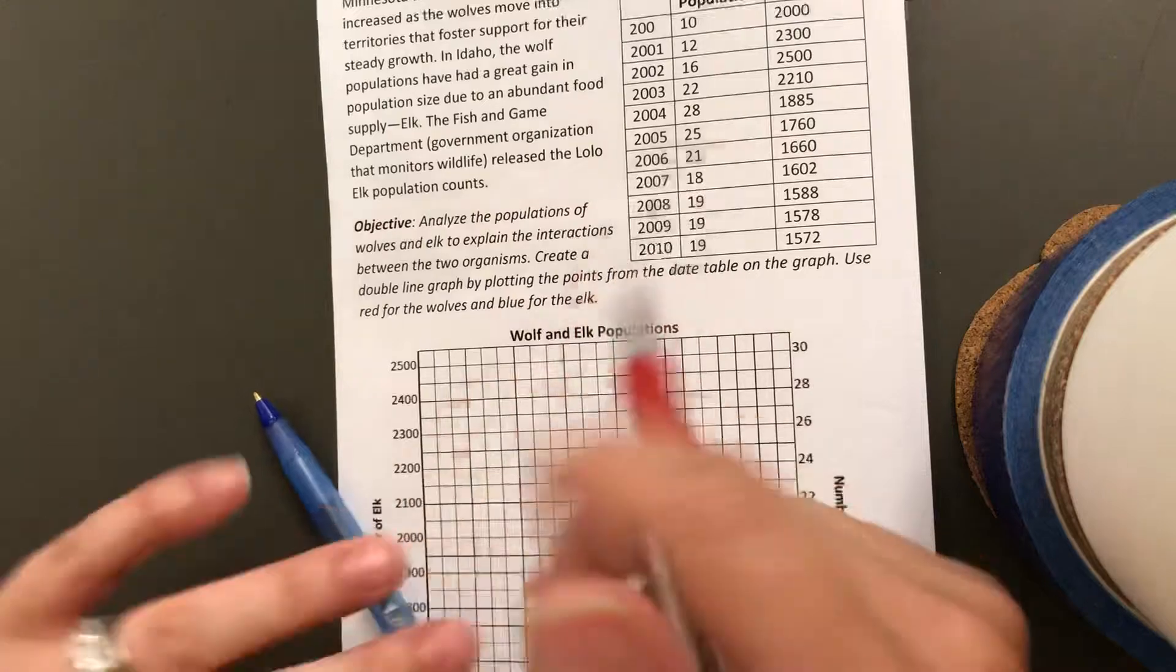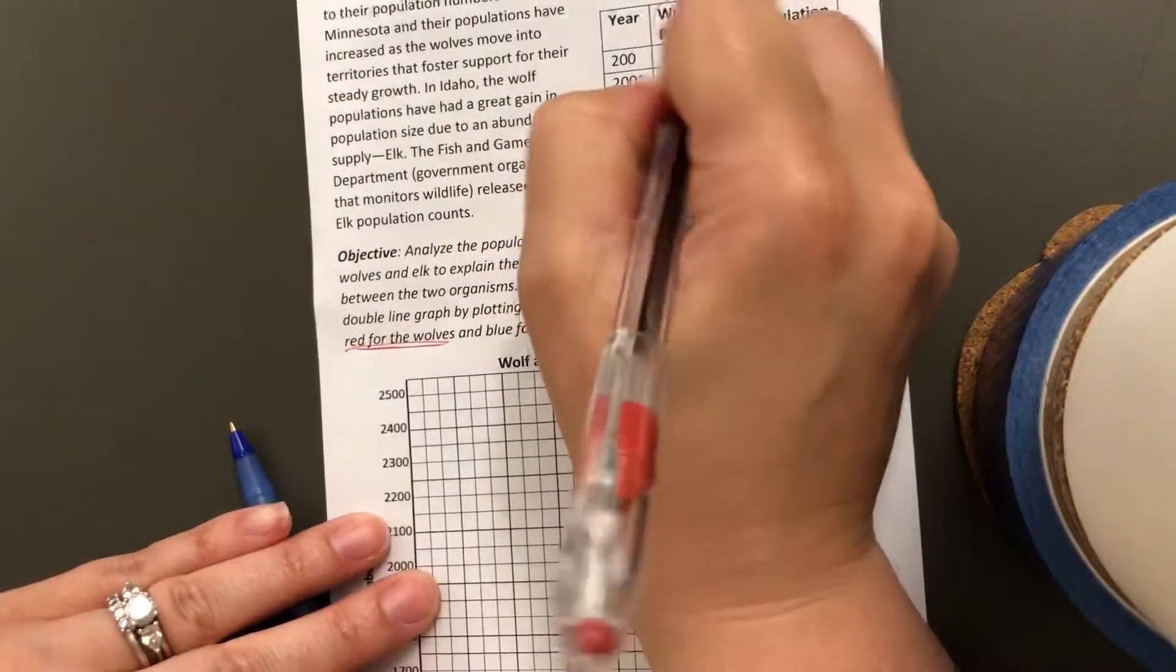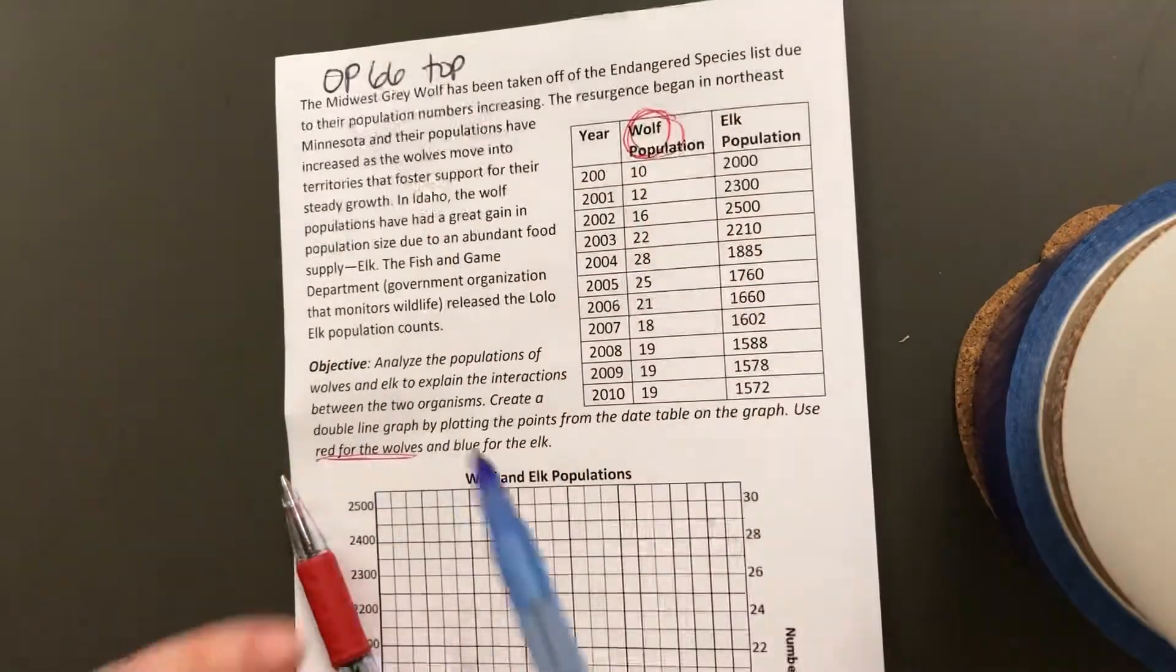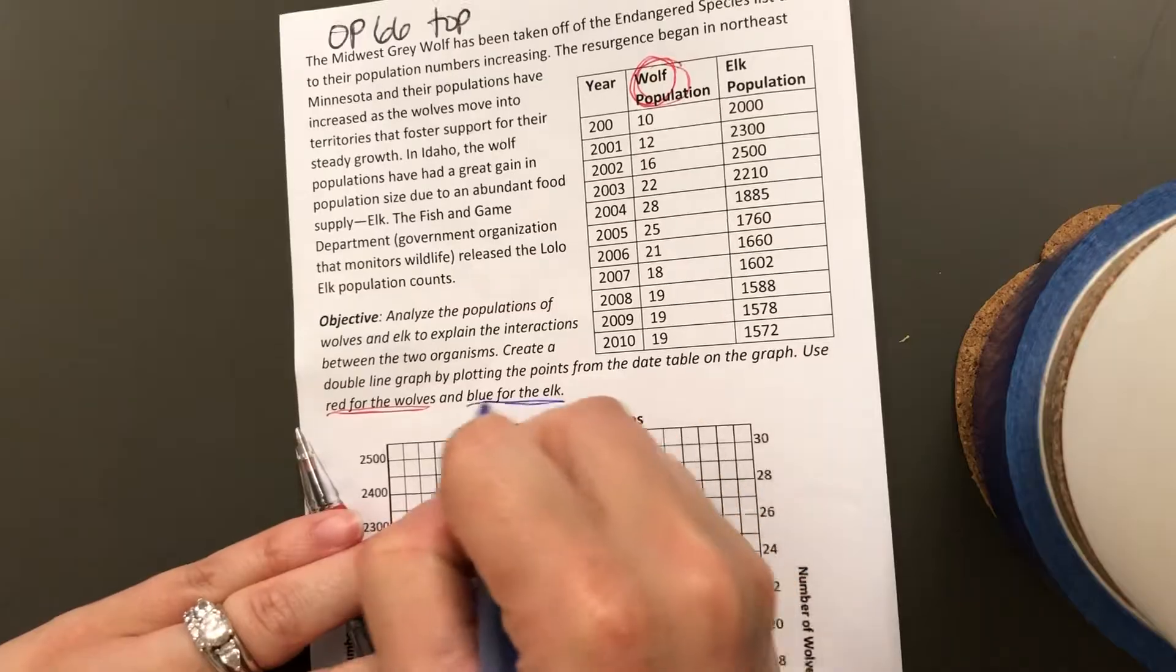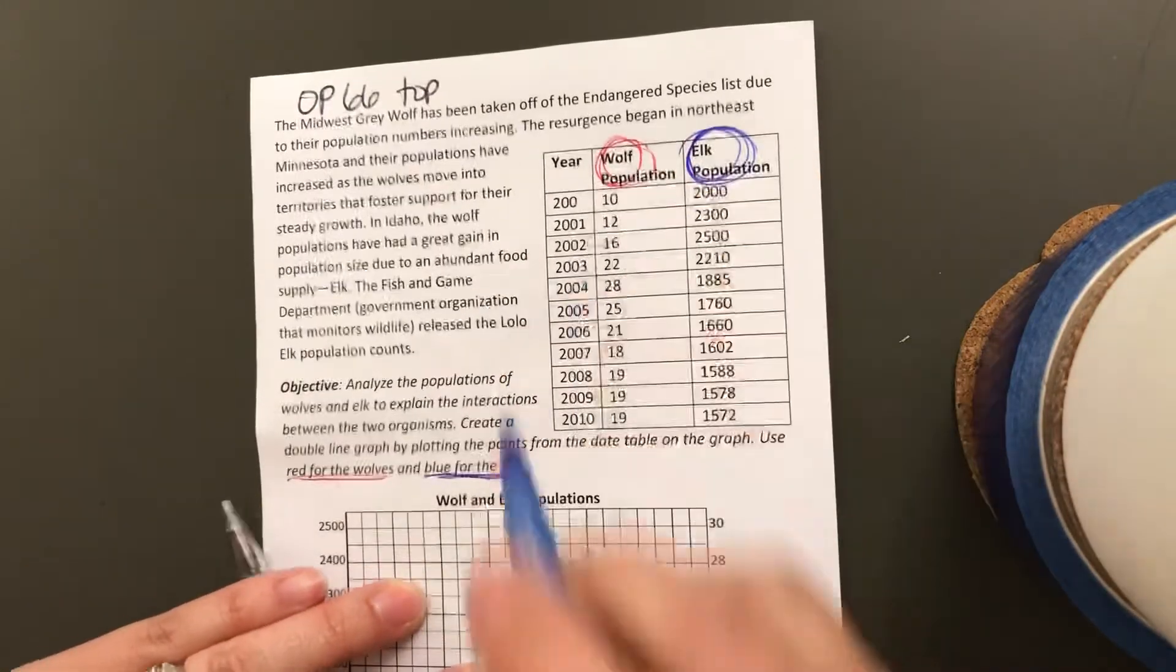So I'm going to use red for the wolves. I'm going to circle it red in here so you remember it's red, and then I'm going to use blue for elk. You can use colored pencils or pens or markers, whatever you have, to use red and blue.